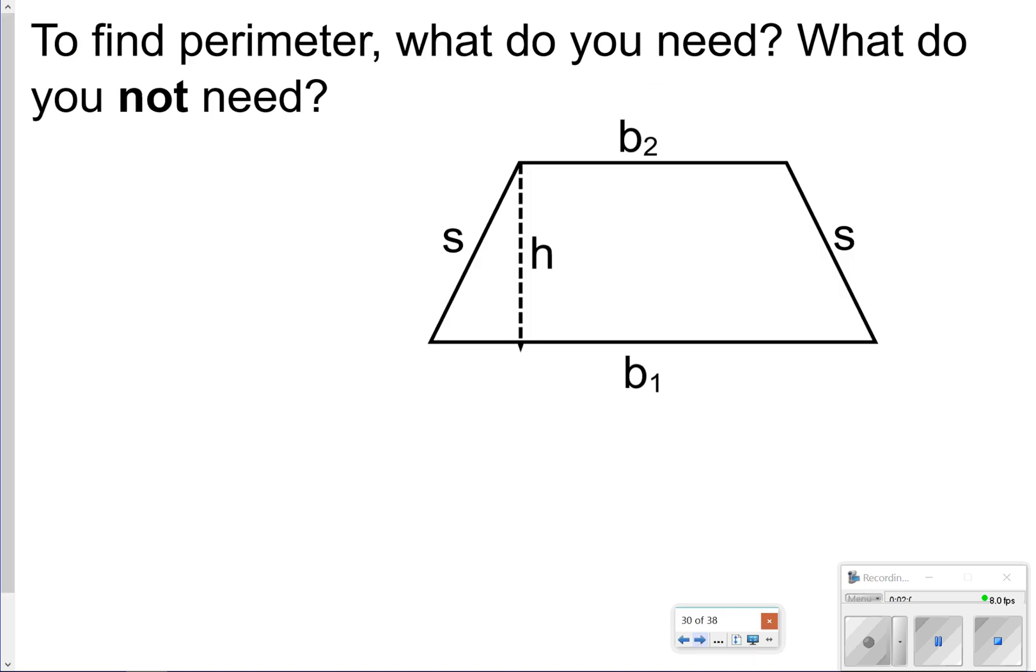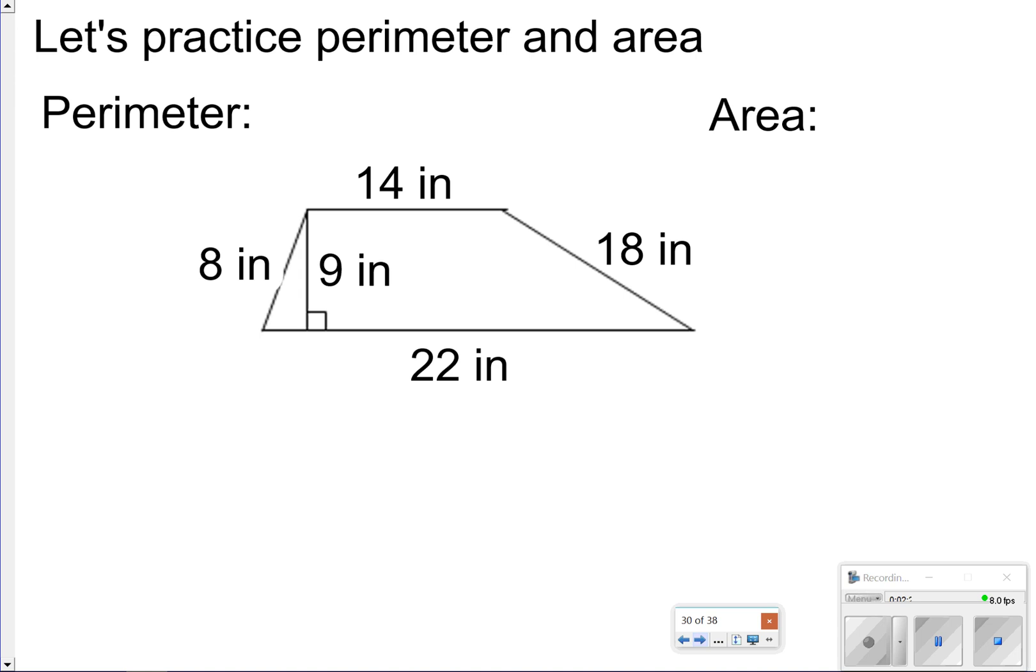Keeping this in mind, to find perimeter there's one thing you do not need, and that is the height. You do not need the height whenever you're finding perimeter because perimeter only deals with the outer edges. Sometimes the height will be an outer edge and that's okay, but in this case this one's in the middle and so you do not need it. So let's go ahead and look at how we're going to find these.